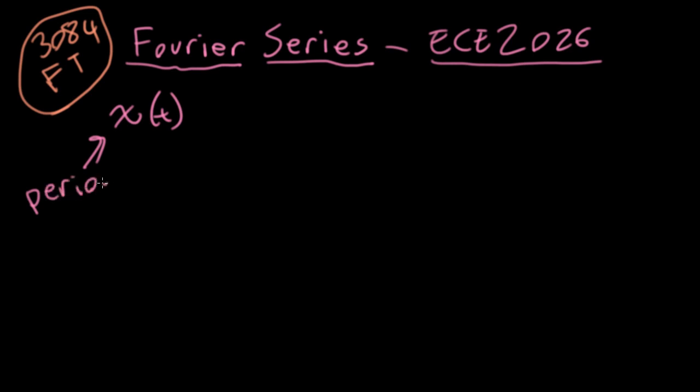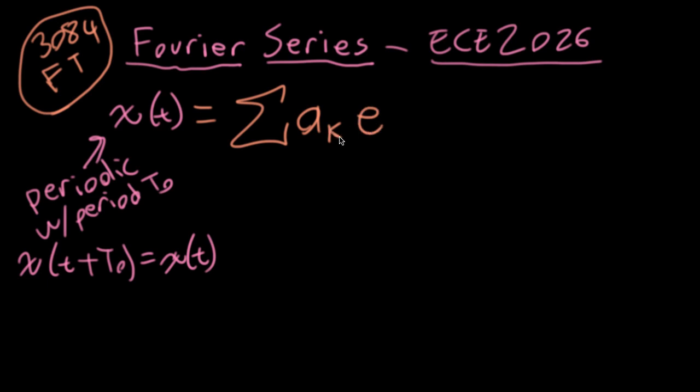Suppose we have a function x of t that is periodic with period t0, i.e. x of t plus t0 is equal to x of t. We can write this as a sum of complex exponentials. The complex exponentials are complex sinusoids with the frequency omega nought times k. This is a sum of k potentially going from minus infinity to infinity, so we have a t here to get our complex sinusoids. The ak's here are called Fourier series coefficients.